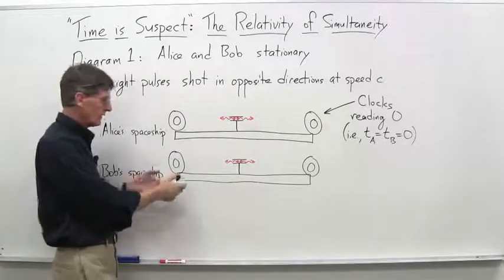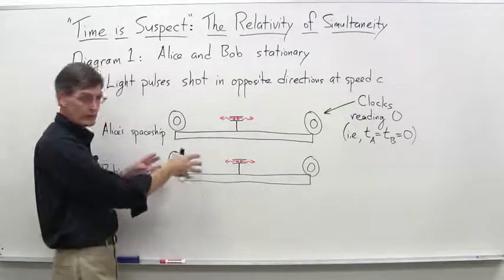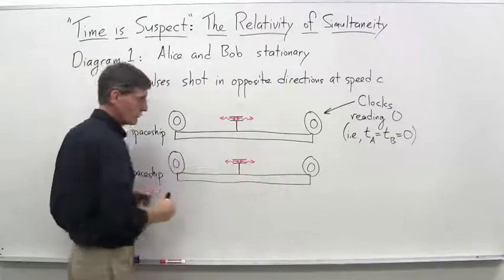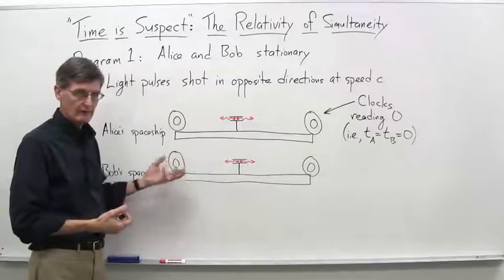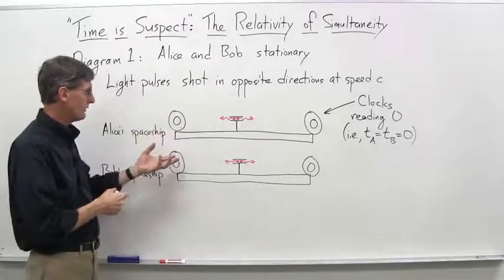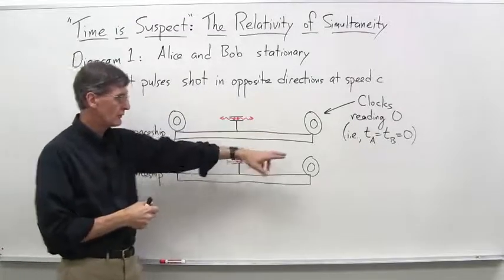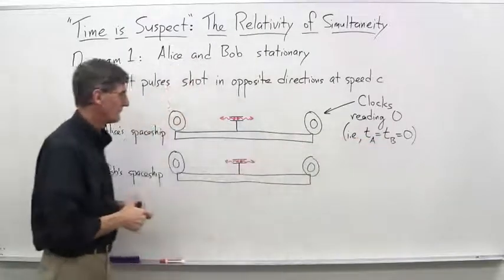Bob has a similar situation. He has his spaceship. His spaceship and Alice's spaceships are identical in terms of the same length. He also has two clocks, one at either end. They're synchronized with each other, so they're always reading the same thing according to Bob. And at this incident time here, everything is zero. So we're starting off with the clocks reading zero. Time on Alice's clocks is zero. Time on Bob's clocks is zero.